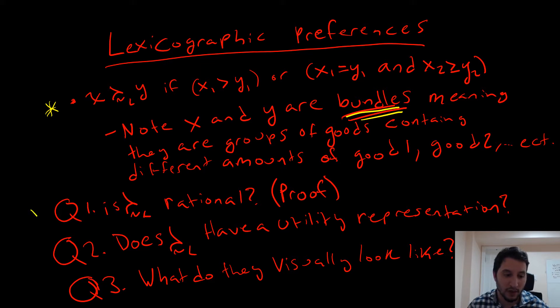In this video, we're going to go through three things. We're going to ask: is this lexicographic preference relation rational? We're going to prove this mathematically. Does our lexicographic preference relation have a utility representation? We're also going to prove that. And for number three, this is going to be saved for the very end, we're going to ask what do these visually look like? What do they really seem like if we were to think about them from a visual perspective?